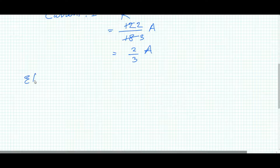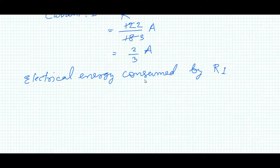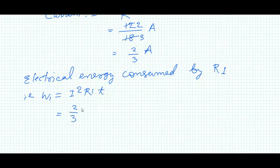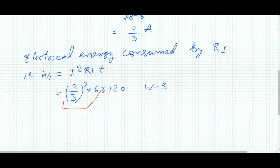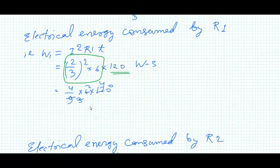Therefore, electrical energy consumed by R1, that is W1, equals I squared times R1 times T. This is equal to (2/3) squared into 6 into 120 watt-seconds. That equals 4 by 9 into 6 into 120.